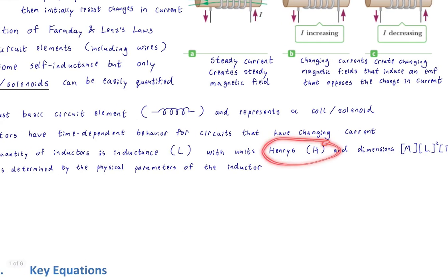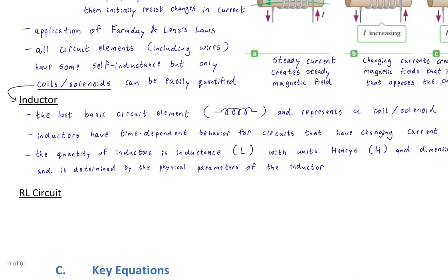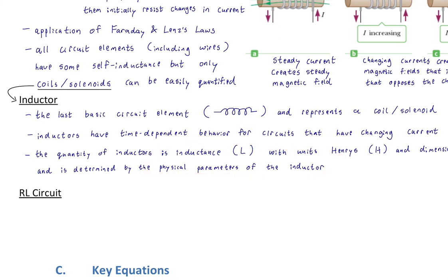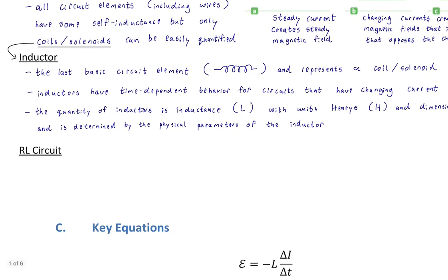Inductance is determined by the physical parameters of the inductor — which should sound similar to how we determined resistance (requiring resistivity, wire width, and length) and capacitance (requiring plate size, gap, and dielectric). For inductance, we'll need to know how long the coil is and how wide the coil is. That's an inductor and the property of inductors: inductance.